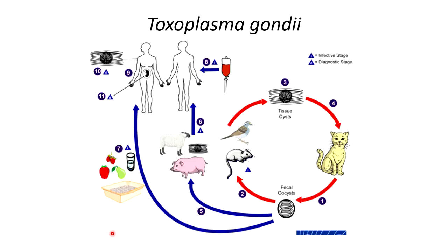Moving on to the life cycle of Toxoplasma gondii: it begins when the cat sheds fecal oocysts. Similarly to Eimeria, they're not sporulated immediately — it takes a few days to become sporulated, so they're not immediately infectious. Another small mammal such as a mouse or a bird can then ingest the feces or food contaminated with the cat's feces containing sporulated oocysts. The parasite will then form tissue cysts within the muscles of these small mammals, and then the cat will eat these small mammals, ingesting the infected meat — that's how the cat continues to be infected.